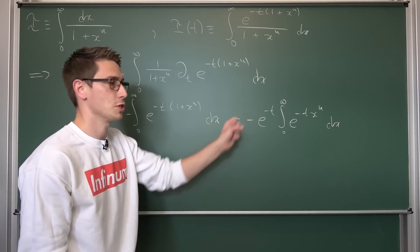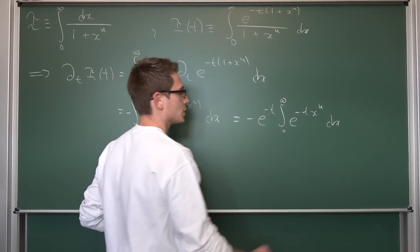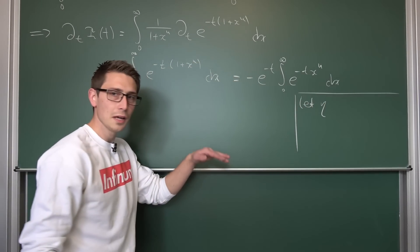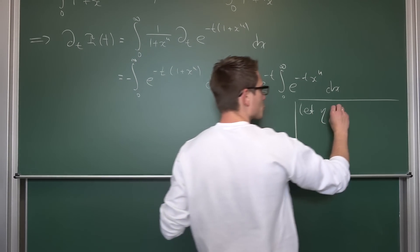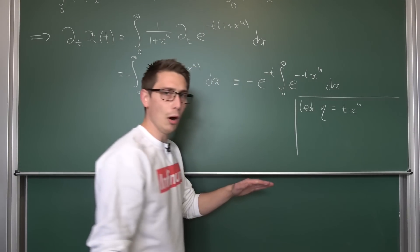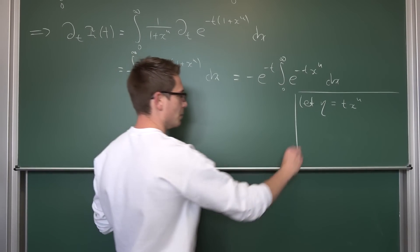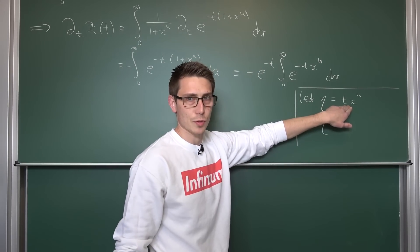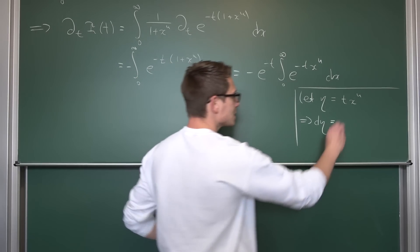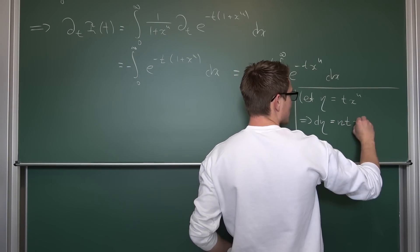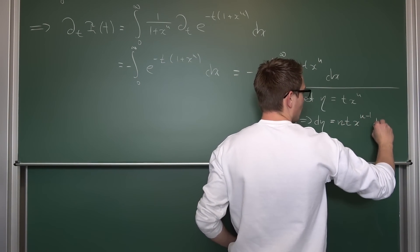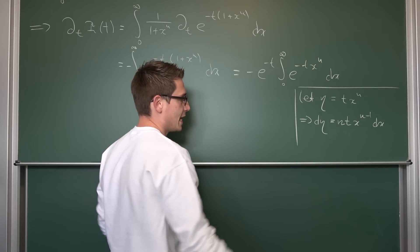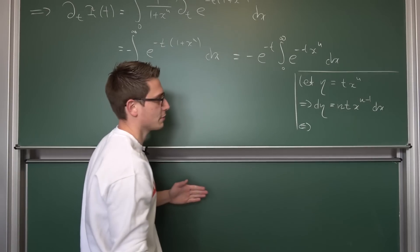For this we introduce a substitution. We let eta be equal to t times x to the nth power. We differentiate both sides implicitly with respect to x, leaving us with d eta being n times t times x to the n minus 1 power dx. Bringing everything to the left-hand side except for dx leaves us with d eta divided by n times t times x to the 1 minus n power equal to dx.